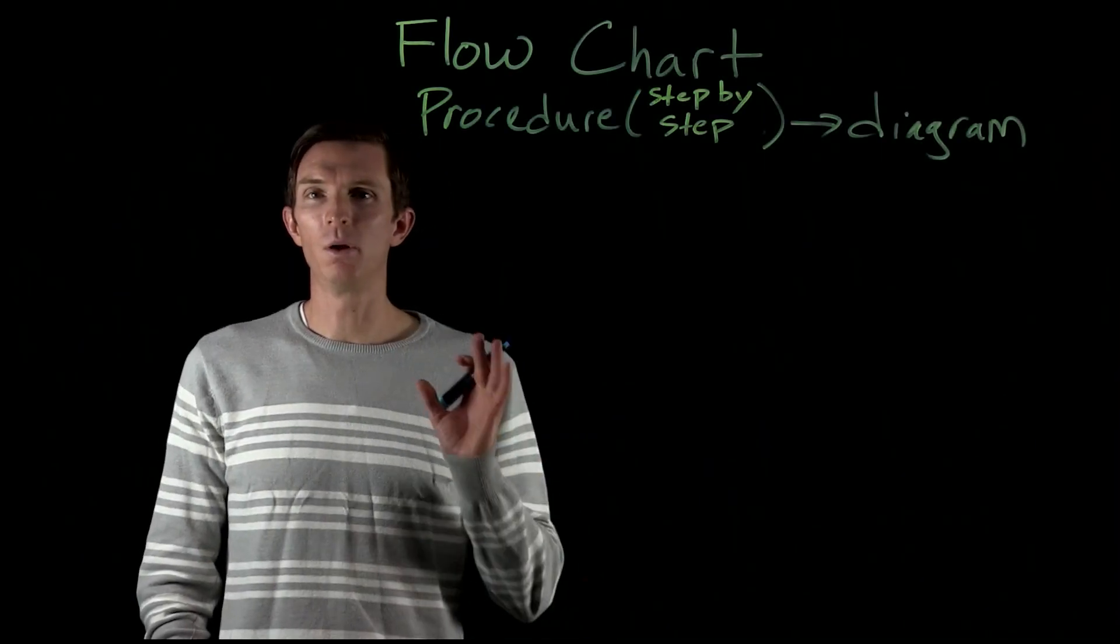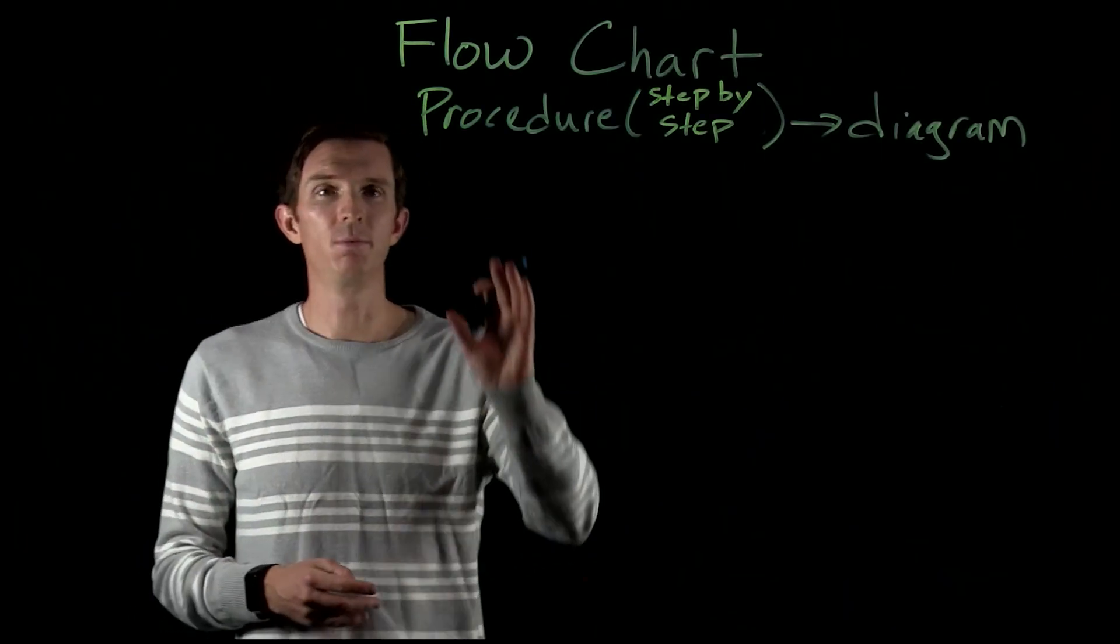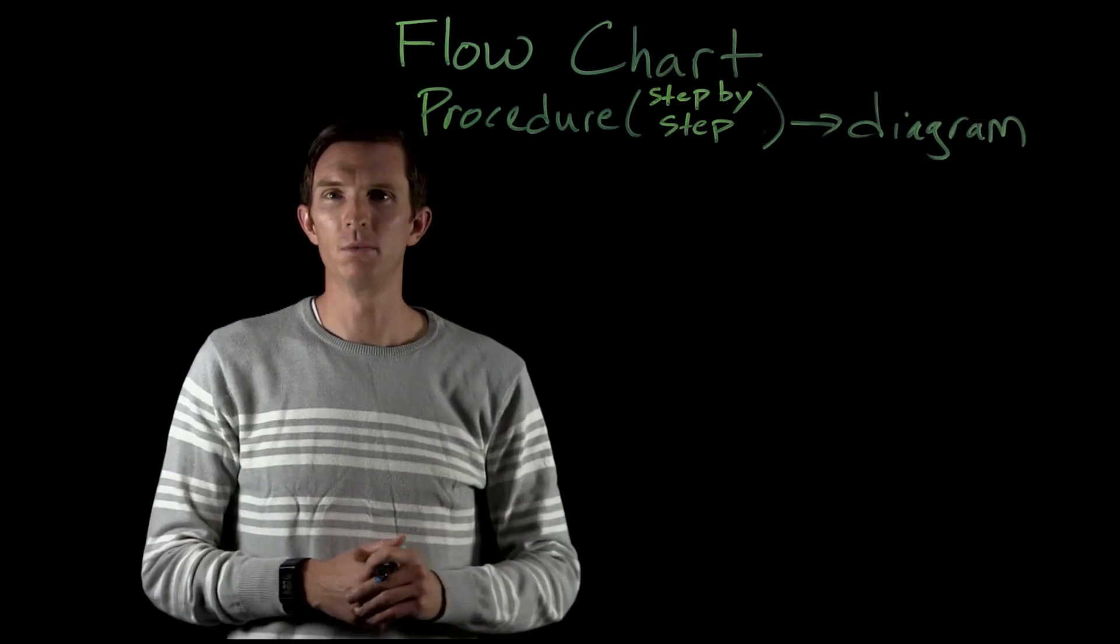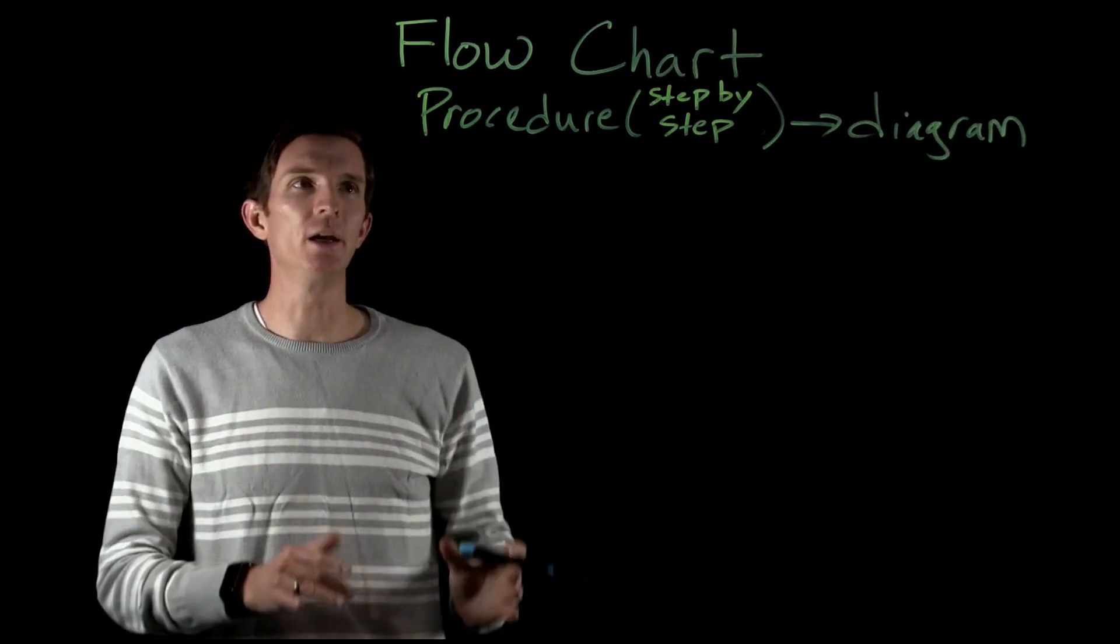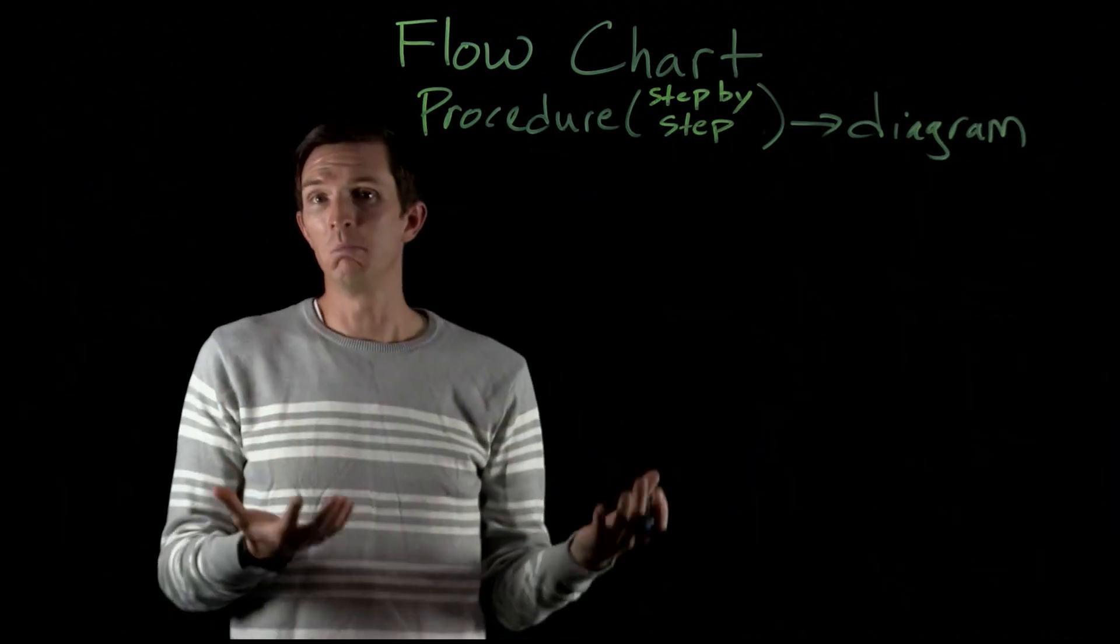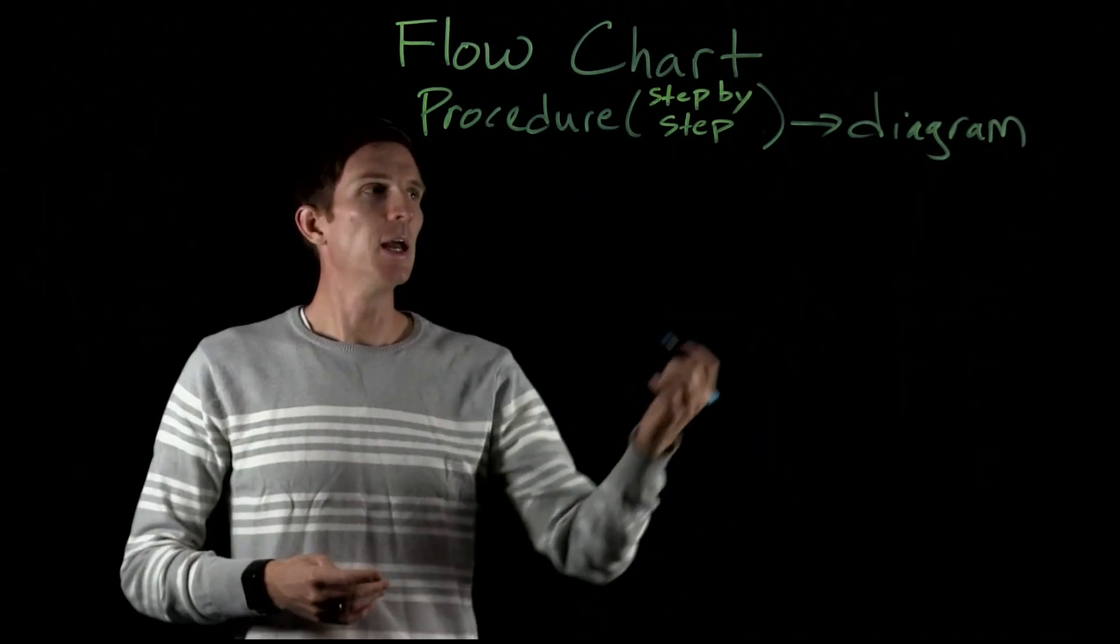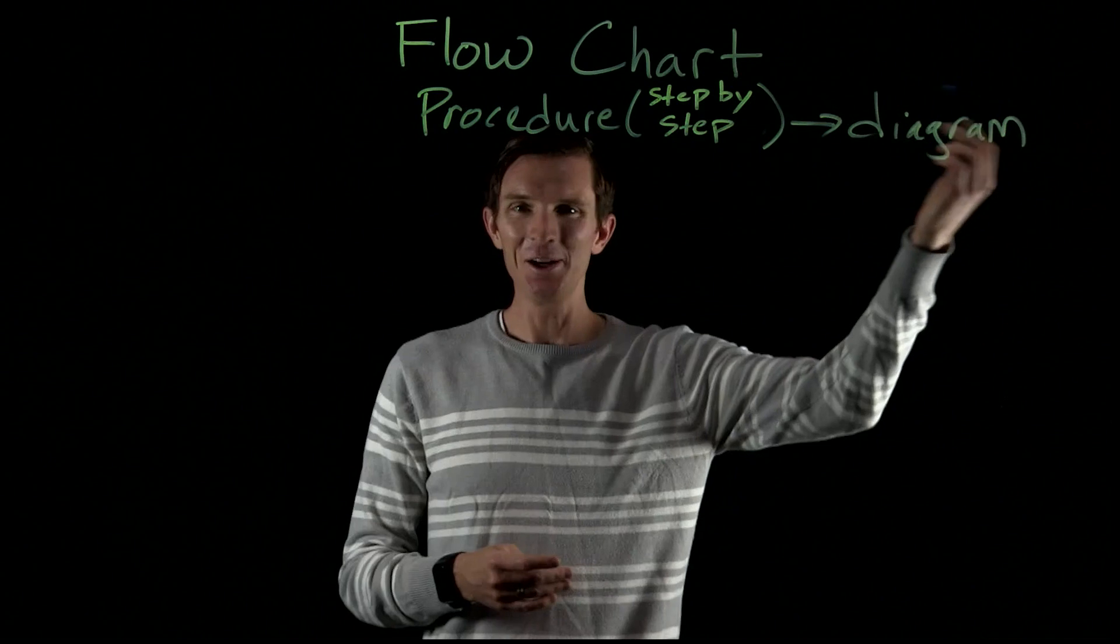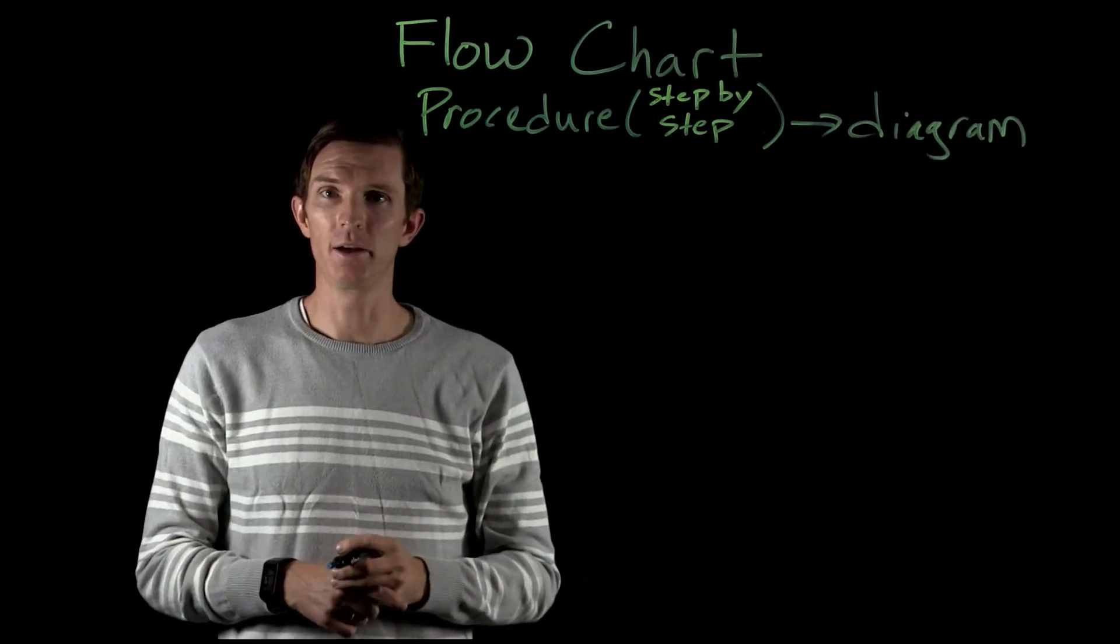The goal of this video is to describe how we think through the process of creating an experimental flowchart. So basically what we're going to do is we're going to take our procedure, which usually is some kind of step-by-step procedure or maybe if we're given some guidelines, and drawing out a diagram of what that procedure is going to look like.